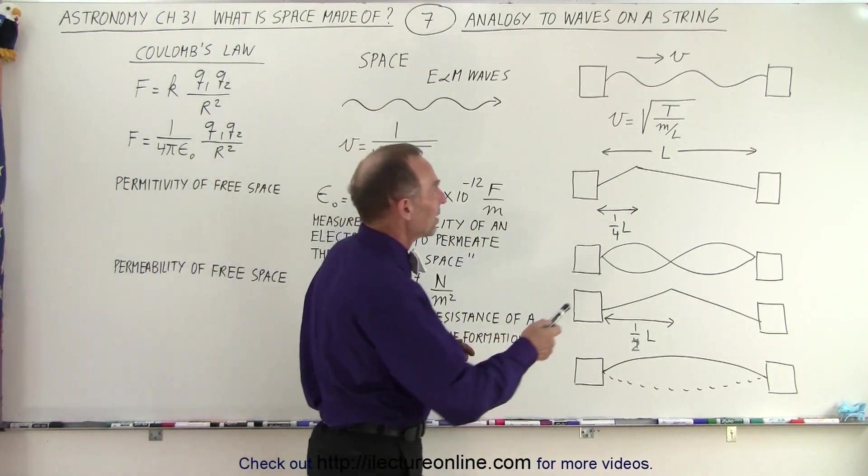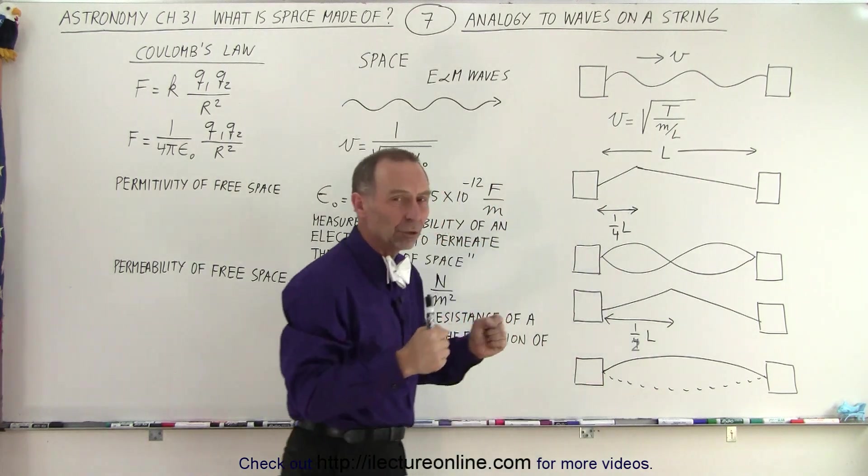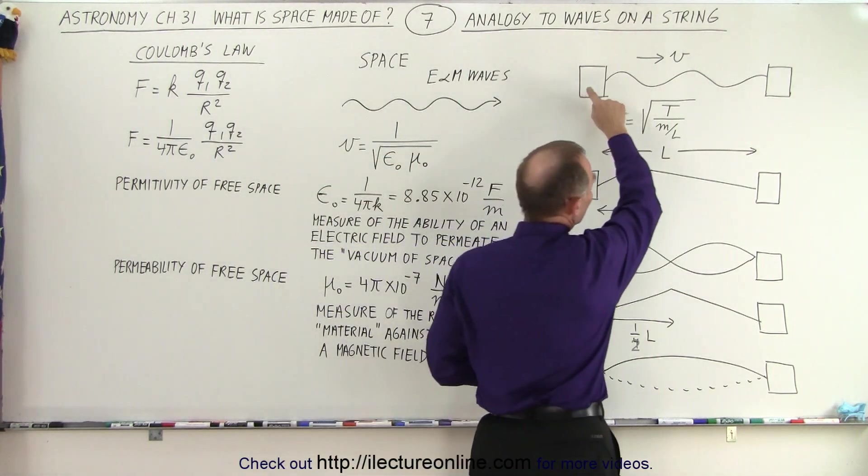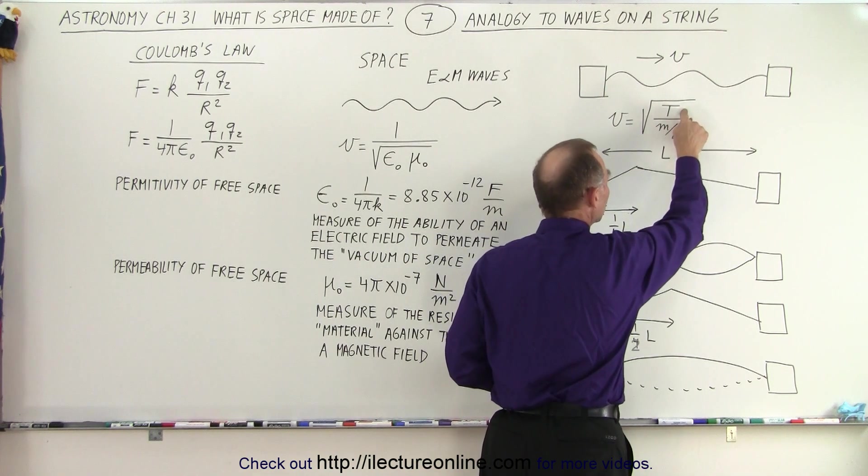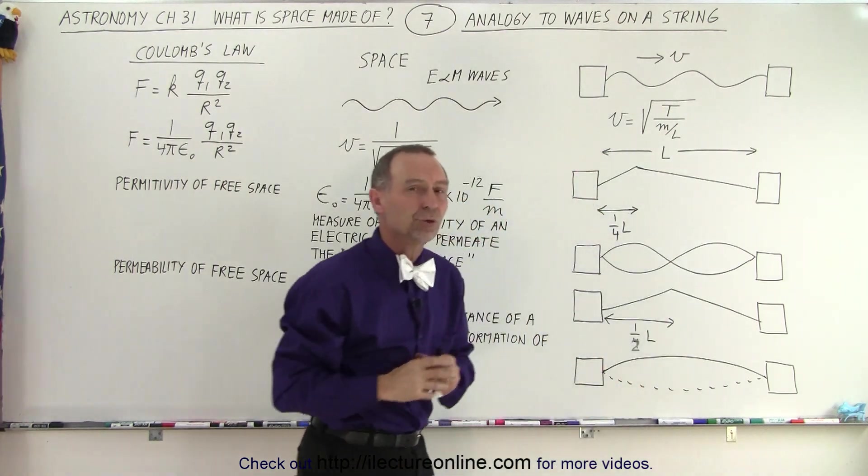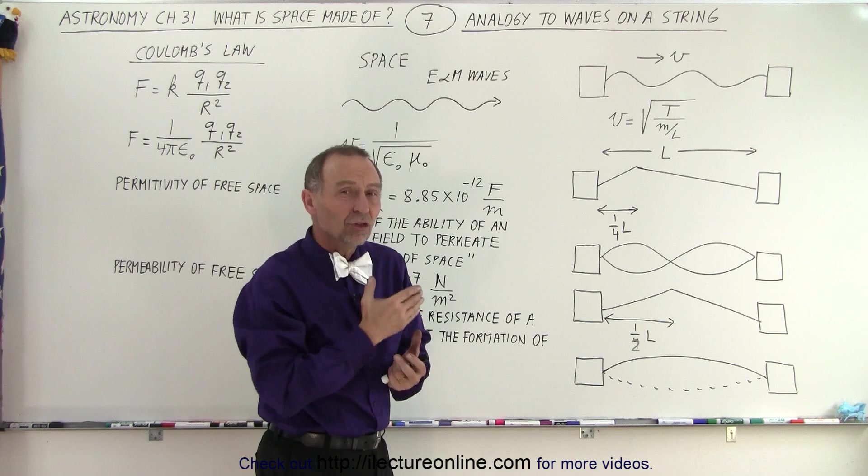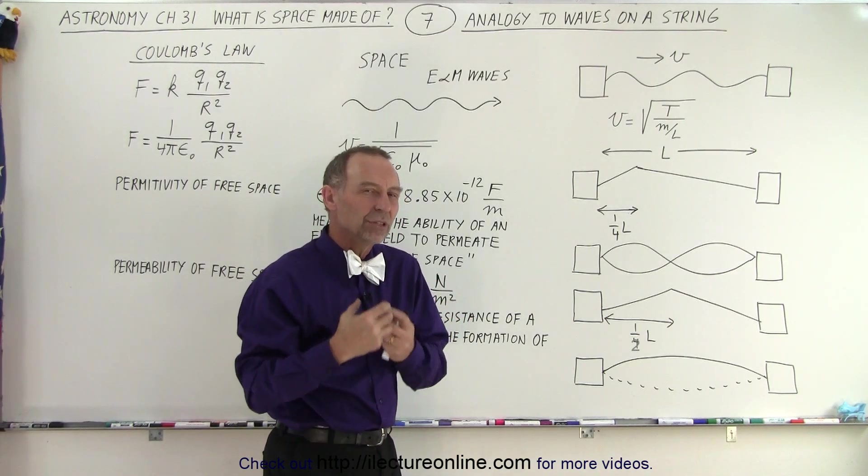Here we have a string that's tied between two strong posts that are steady and holding in place, and we realize that the velocity of a wave traveling across that string depends upon the square root of the tension in the string divided by the mass per unit length. If we increase the tension, the speed of the wave will increase. If we decrease the tension, the speed of the wave will decrease.